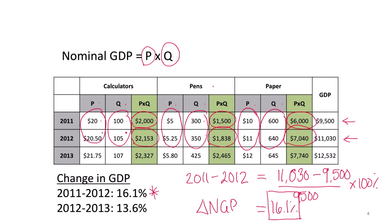You can do the same calculations for the change from 2012 to 2013. We see that prices are rising and quantity produced is rising, yielding an increase in nominal GDP of 13.6%.